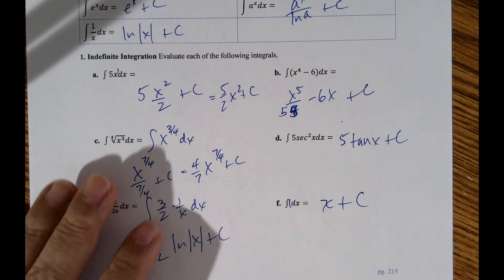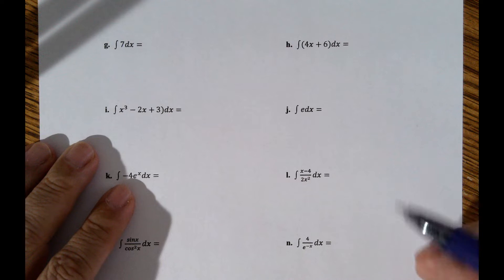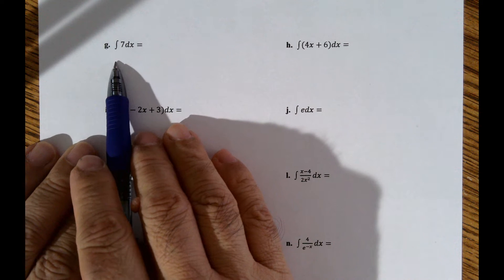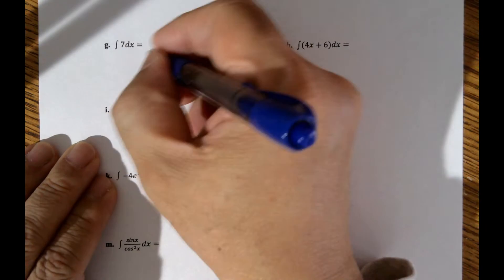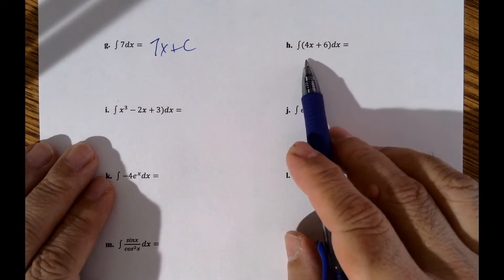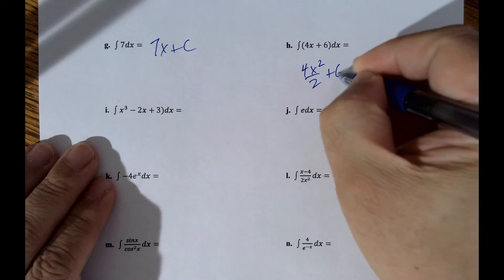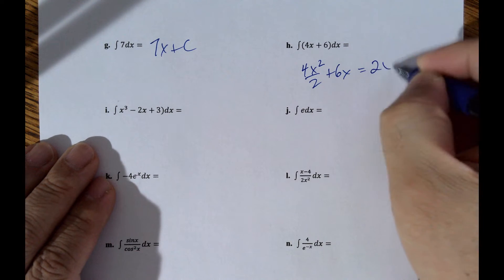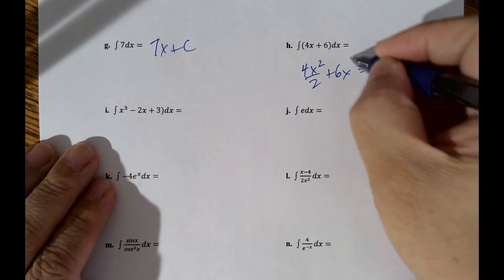I'm going to go on to page 216. Go ahead and try this one — I'll pause a bit so you can pause the video. Here's the answer: 7x plus C. Next one: 4x — add 1 to the exponent and divide by the new exponent — so it's 4x squared over 2 plus 6x. Clean that up: 2x squared plus 6x plus C. Don't forget the constant of integration!